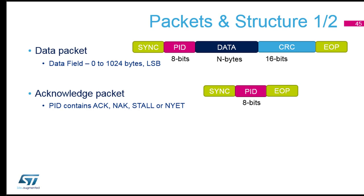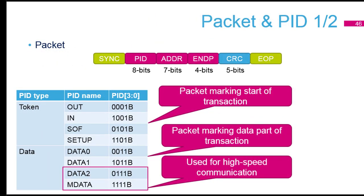Coming back to the token packet: what kinds of token packets do we have? OUT, IN, start-of-frame, and SETUP. Something important in USB — the wording OUT and IN is always from the host point of view. We are host-centric. On the device side, when I'm talking about OUT, it means something I receive. It's not natural, but you have to think that way. An OUT token means traffic generated from the host to the device. If you are inside the device, you will see OUT packets — meaning something you will receive.